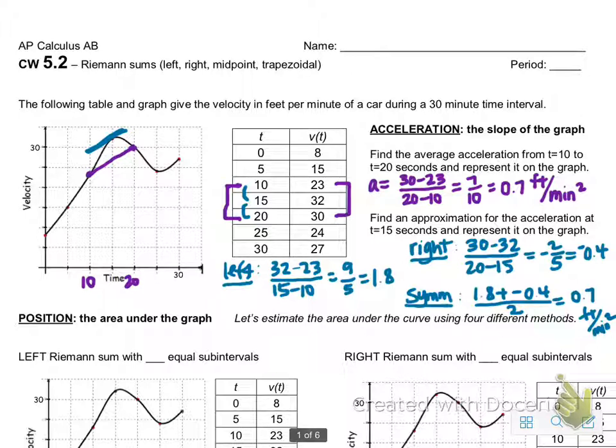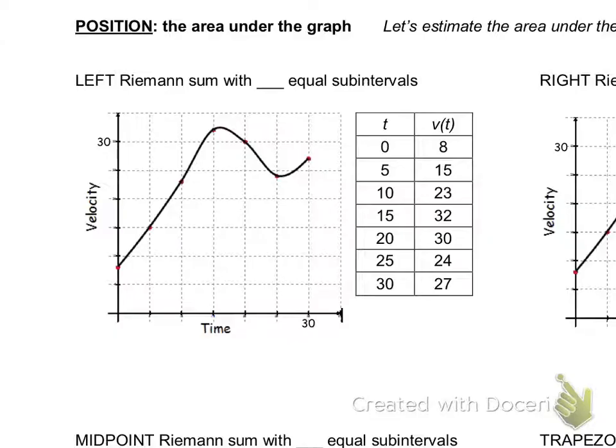So next we're going to talk about position, which we talked about on Monday as being the position is the area under the graph. And we're going to talk about four different methods. Two of them you already know, but we're going to make them more explicit and also a little bit trickier. And then we'll learn two new methods.